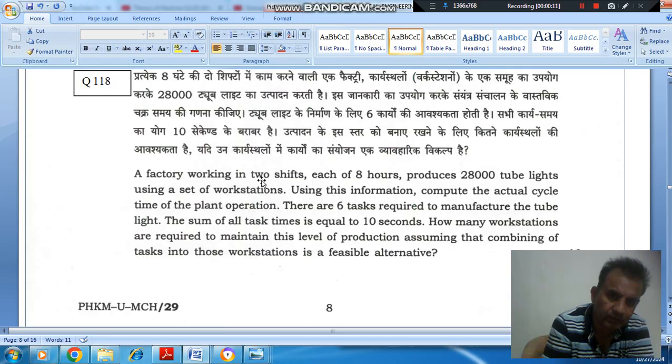A factory working in two shifts, each of eight hours, produces 28,000 tube lights using a set of work stations. Using this information, compute the actual cycle time of the plant operation. There are six tasks required to manufacture the tube lights. The sum of all task times is equal to 10 seconds. How many work stations are required to maintain this level of production, assuming that combining of tasks into these work stations is a feasible alternative?